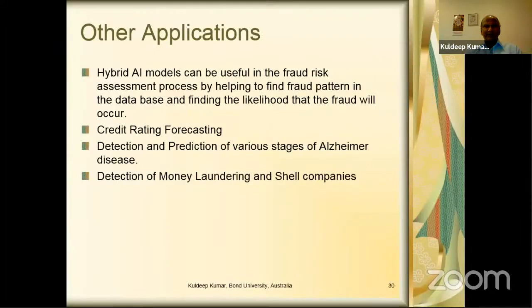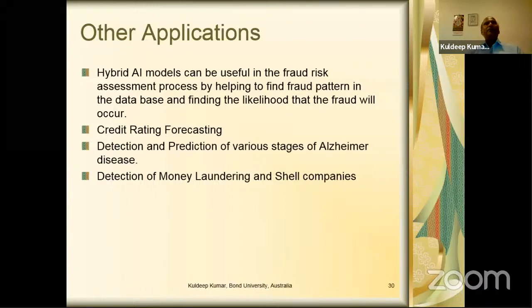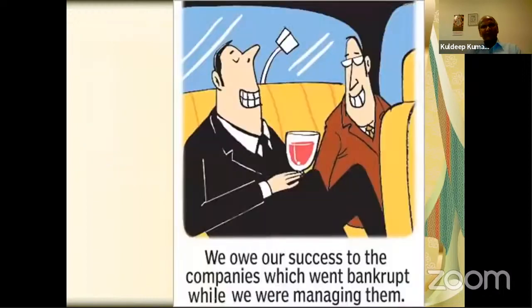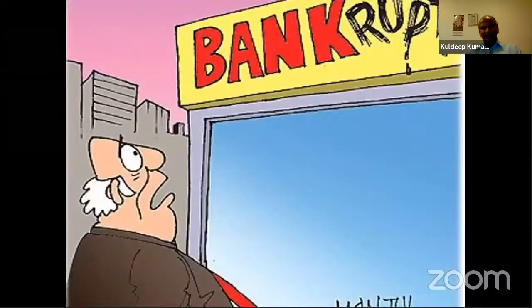Hybrid models can also be useful in fraud risk assessment, and in predicting, forecasting, and detecting various stages of Alzheimer's disease. Based on the ADNI database, we can tell the probability that a person is likely to progress from one stage to the next, or what's the probability a normal person will get Alzheimer's or Parkinson's disease. Detection of money laundering and shell companies is another student's research area — a big problem in India. Statistical tools can detect whether a company is genuine or a shell company.